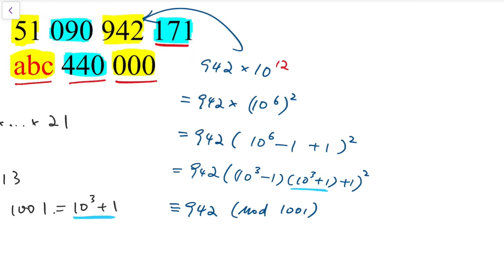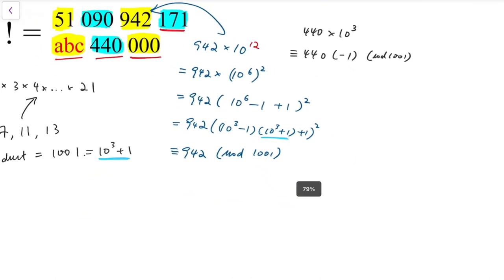whereas for the blue blocks, for example, for 440, if I do mod 1001, I just have to add a minus sign before it.